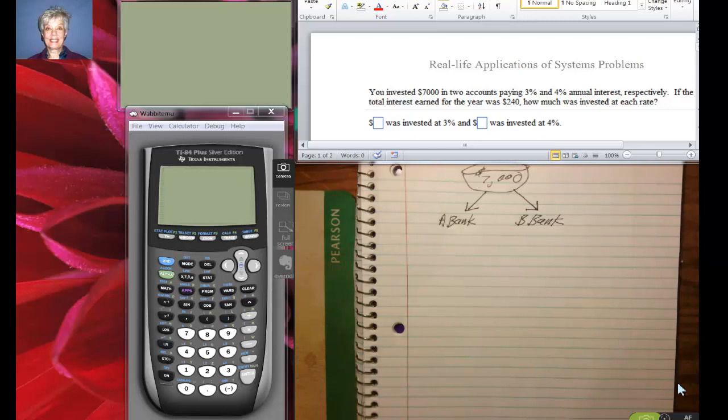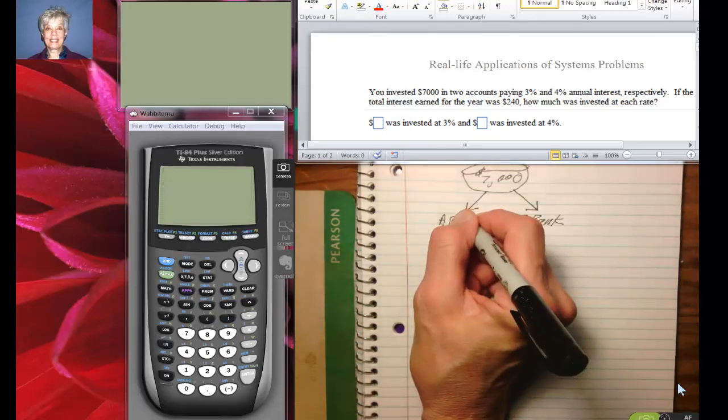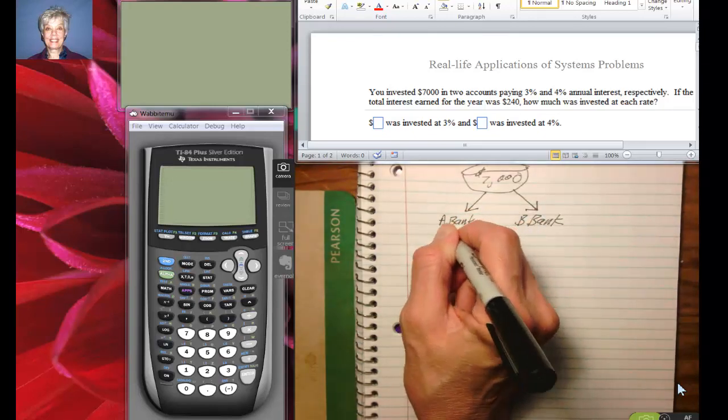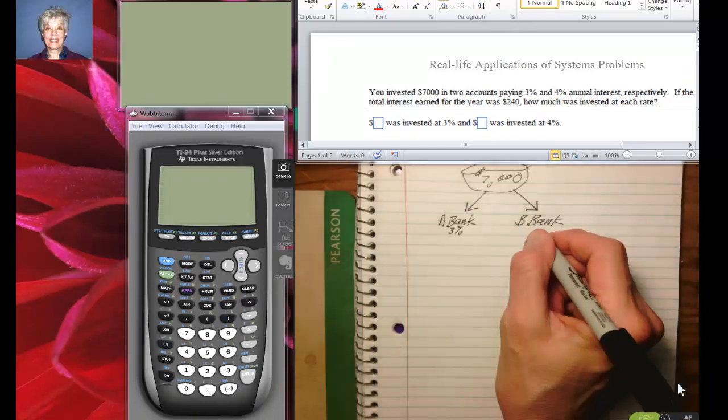So this bank, however much money you put in, is going to pay you 3% on that money. That's their way of paying you to use your money. And this bank over here is going to pay 4% to use your money.